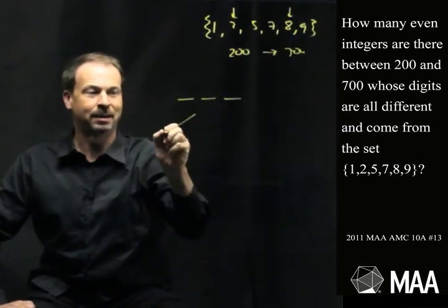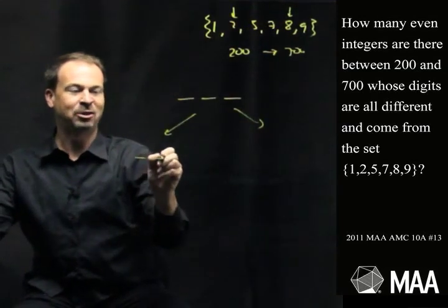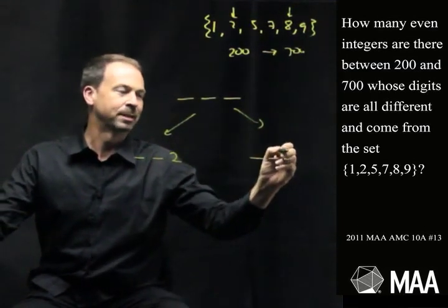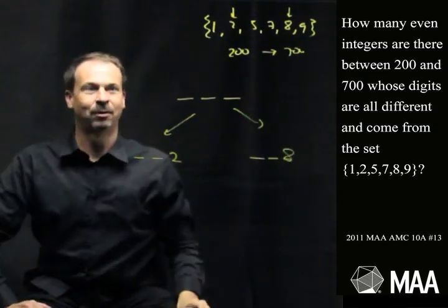Alright, so two possibilities. We've got three-digit numbers that end in 2, or three-digit numbers that end in 8. Fair enough.